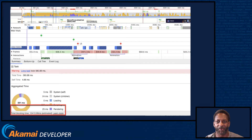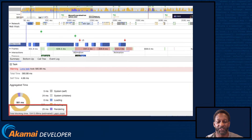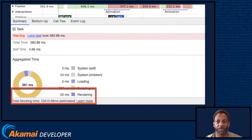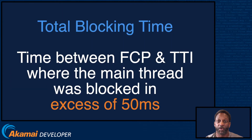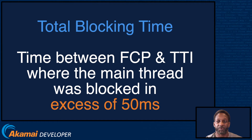Another CPU metric related to long task time that's useful to track is total blocking time. DevTools reports total blocking time at the bottom of the Summary tab. Total blocking time measures the total amount of time between first contentful paint and time to interactive where the main thread was blocked long enough to prevent user input. The blocking time for any single task is its duration in excess of 50 milliseconds, and the total blocking time for a page is the sum of the blocking time for each long task that occurs between first contentful paint and time to interactive.